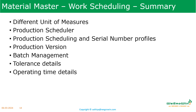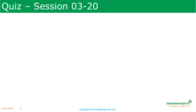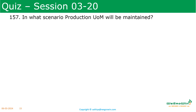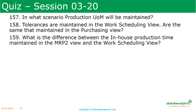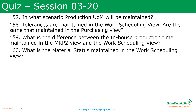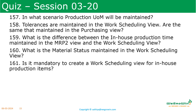In this session, we discussed attributes related to the work scheduling view, like different units of measure, what is the production scheduler, what is the production scheduling profile, serial number profile, production version, batch management, different tolerance details, and how to maintain the operating time details. To refresh our understanding, here are quiz questions for this session: In what scenario will the production UOM be maintained? Are the tolerances maintained in the work scheduling view the same as those in the purchasing view? What is the difference between in-house production time maintained in the MRP2 view and the work scheduling view? What is the material status maintained in the work scheduling view? Is it mandatory to create a work scheduling view for in-house production items? We will see the answers in the next session.